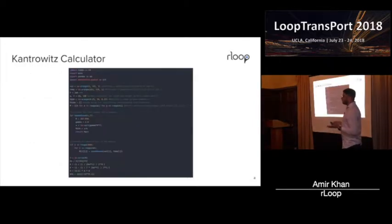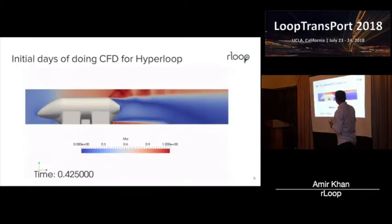So how we started doing CFD for our rPod, our rPod 1.0. So I wrote this simple Python program for Kantorwitz calculator. So it's a simple calculator which you give that I have this size of vehicle and I want to go this fast and it will spit out what size of tube you need, what kind of pressure and temperature you have in the tube. So this was a starting point for rPod and we started off using OpenFOAM because we didn't have access to any other thing and these were the initial days of doing CFD for rLoop.